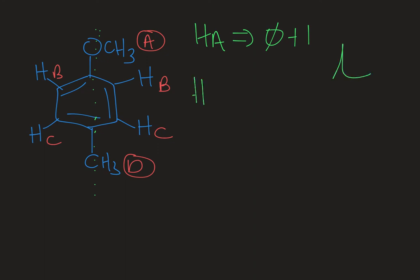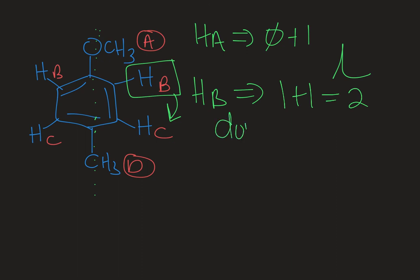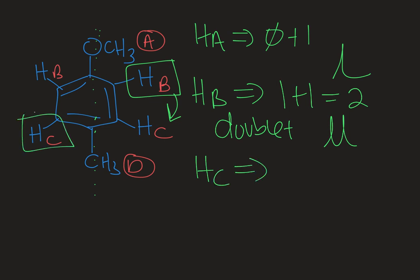Now Hb — there are two of them, but each Hb has only one neighbor. For example, this Hb has one HC next to it, not two. So N plus 1 is 1 plus 1 equals 2, meaning Hb shows up as a doublet. The number of a given type of proton shows up in integration, which is a separate video. Similarly, each HC — there are two — has only one neighbor, one Hb next to it. So 1 plus 1 equals 2, also a doublet.